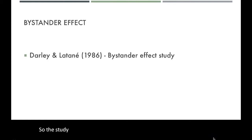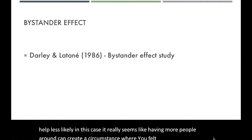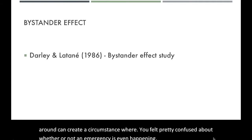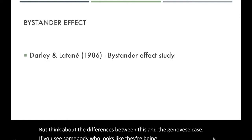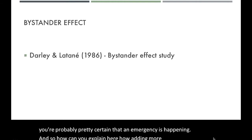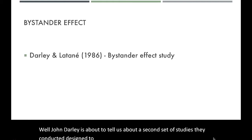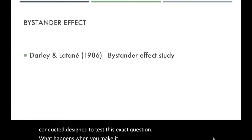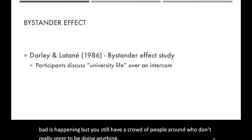The smoke study provides some really intriguing evidence that adding more people to a situation can make help less likely — in this case, having more people around can create confusion about whether an emergency is even happening. But think about the differences between this and the Genovese case. If you see somebody who looks like they're being violently attacked, you're probably pretty certain that an emergency is happening. So how can you explain how adding more people would make you less likely to help? Darley is about to describe a second set of studies designed to test this exact question: what happens when it's unambiguous that something bad is happening, but a crowd of people still doesn't seem to be doing anything?